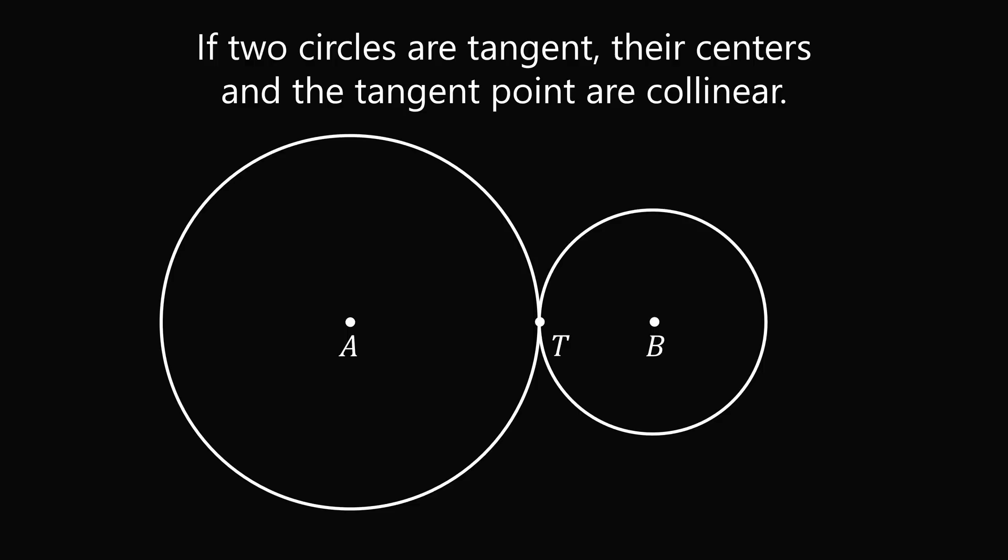So here we have circles A and B that are tangent at a point T. This principle says that ATB is a straight line segment. To understand why, construct the tangent line through point T.